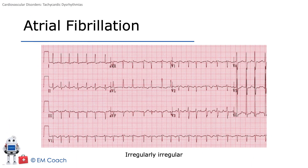Atrial fibrillation (AFib) is very common. It's associated with increasing age, hypertension, ischemic or valvular disease, cardiomyopathy, hyperthyroidism, intoxication, PE, or it can often be idiopathic. This is an EKG example where you have a narrow complex, irregularly irregular rhythm.